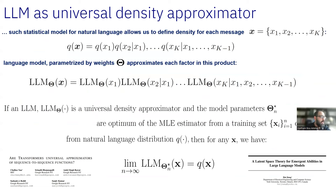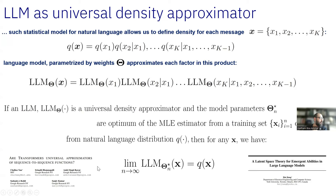Now we are going to borrow some results from two papers: one called 'A Latent Space Theory for Emergent Abilities in Large Language Models,' and the second, 'Transformers as Universal Approximators of Sequence-to-Sequence Functions.' What these are going to show is that an LLM, given enough training and given enough data, will be able to become a universal density approximator — and they actually prove this in those two papers.